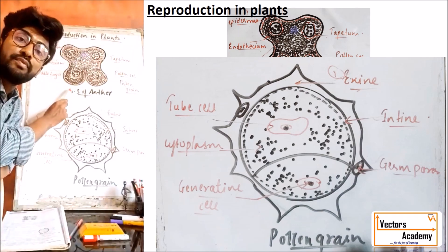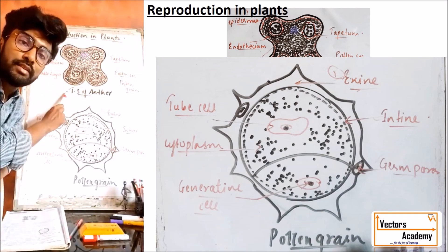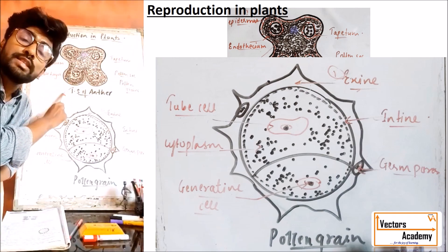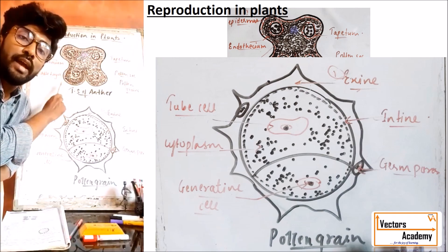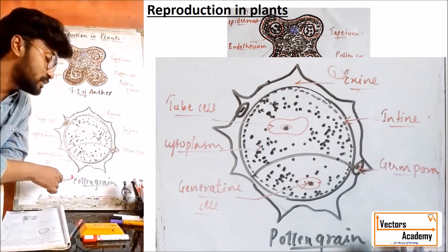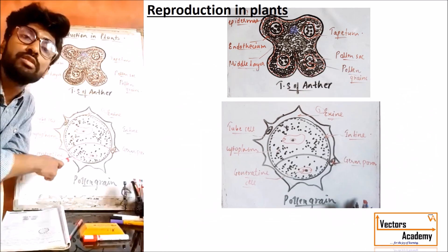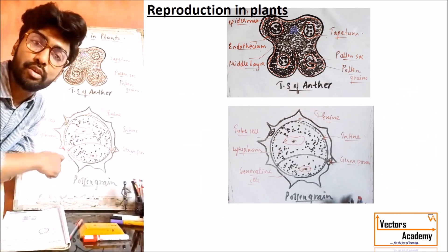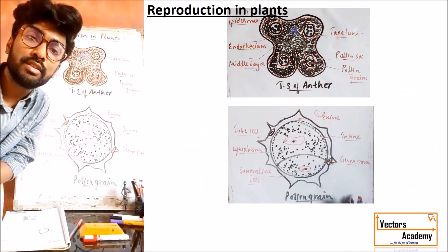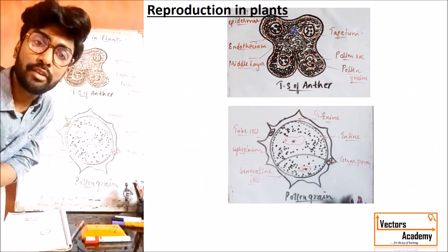So this is the structure of the TS of anther — that is, the transverse section of anther. This is the structure of a pollen grain, also called microsporangium. Thank you very much.